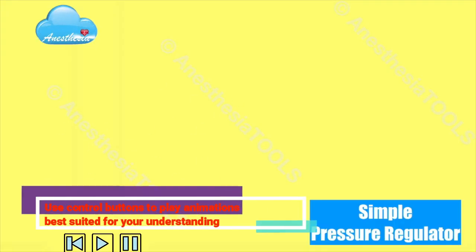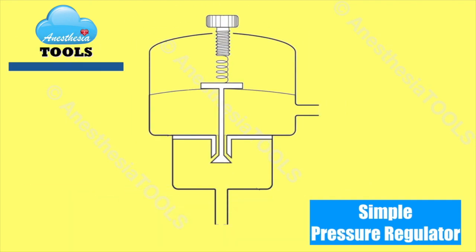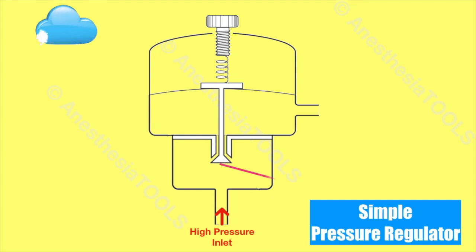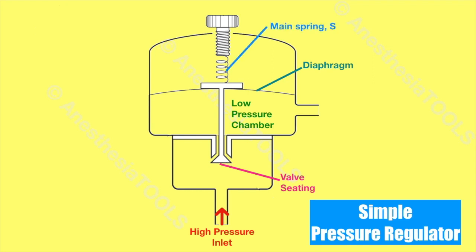Now let us see the working principle of a pressure regulator. The gas from the cylinder passes through a filter and the inlet into the high pressure chamber. The gas then passes through the valve into the low pressure chamber. The increased pressure in the low pressure chamber tends to distend the diaphragm, the force of which is opposed by the tension in the spring.